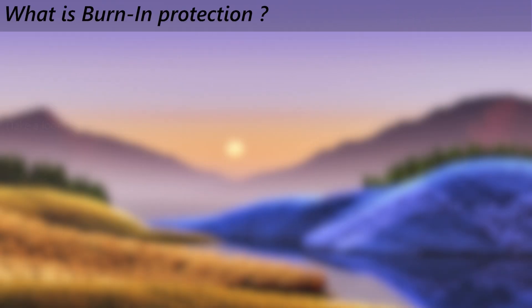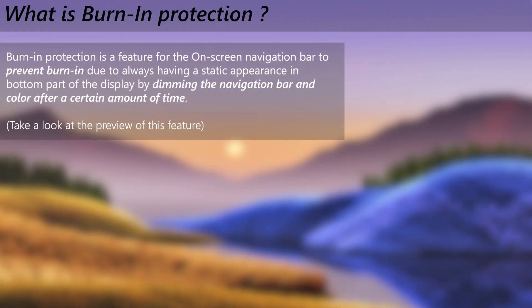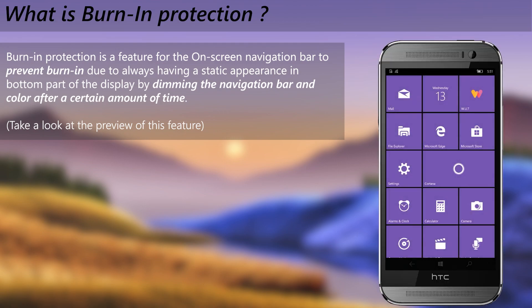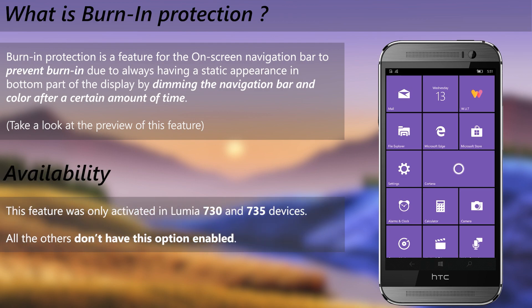Hello. Burn-in protection is an additional feature for the on-screen navigation bar which originally came from Windows Phone 8.1 and to Windows 10 Mobile. What it does is dim the navigation bar and change to a grayish background after a certain timeout to prevent burn-in, although this is completely customizable. This feature was only available for Lumia 730 and 735 devices in Windows 10 Mobile — all others don't have it enabled by default.